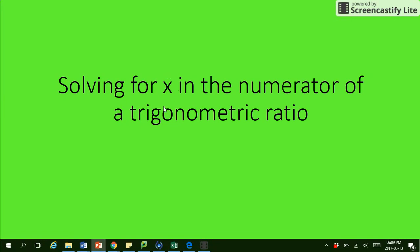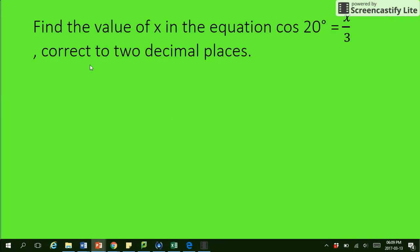So we're looking if we've got x. Okay, so look at this question. It says, find the value of x in the equation, cos 20 degrees is equal to x divided by 3. Correct to two decimal places.